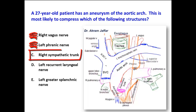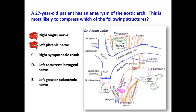The right sympathetic trunk is located in the posterior part of the mediastinum and is much far away from the arch of the aorta. Even if the left sympathetic trunk was mentioned, it is also much away from the arch of the aorta and is less likely to be compressed by it.